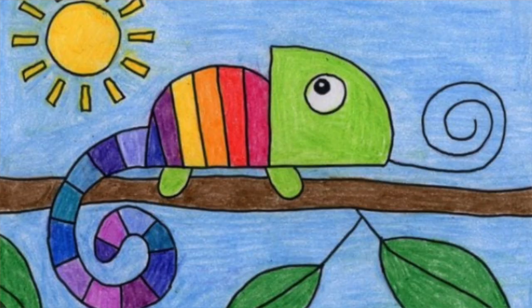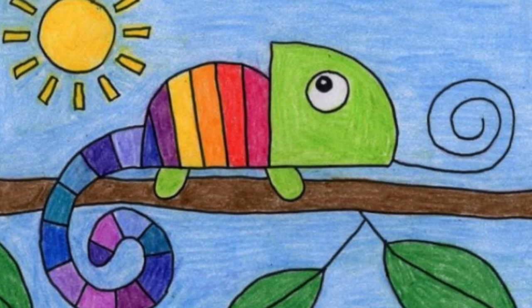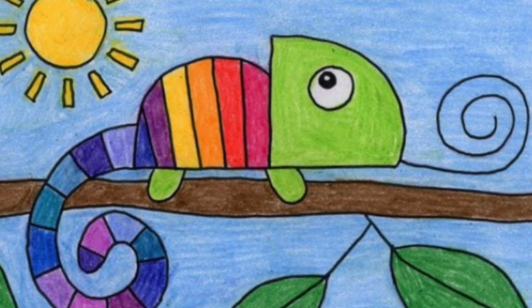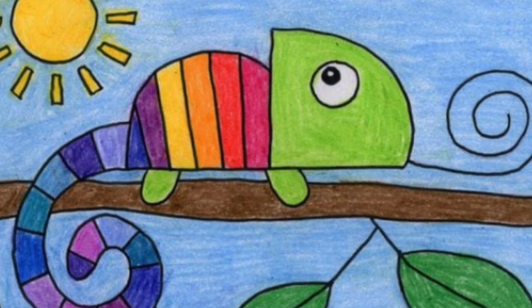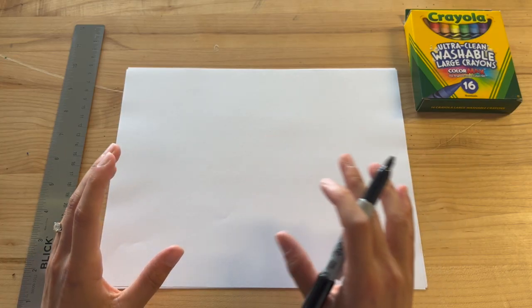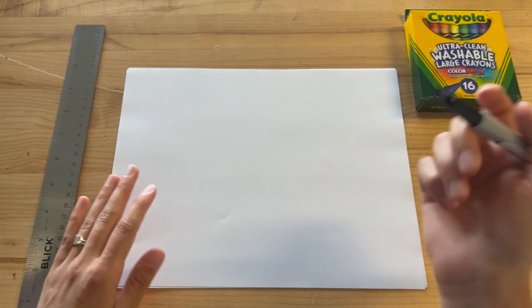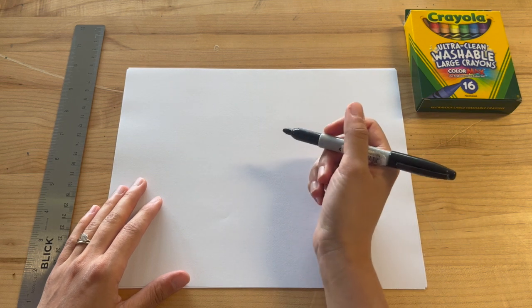Welcome back to Miss Curtis's art class. Today we're going to make a really fun rainbow lizard and this lizard is going to have a lot of colors. There's going to be a pretty little sun in the background. Okay, so let's get started.